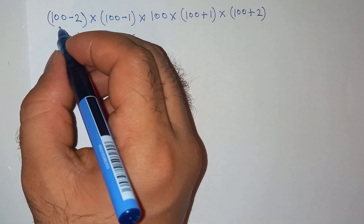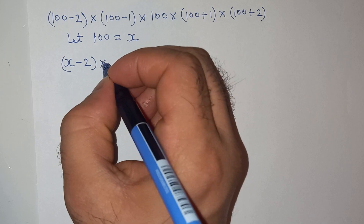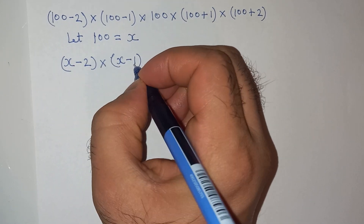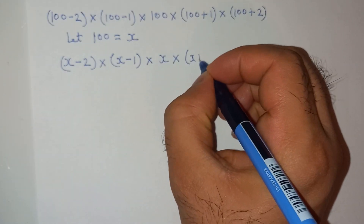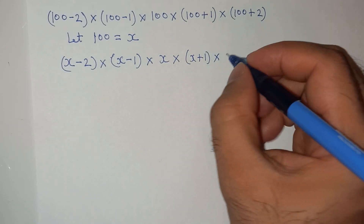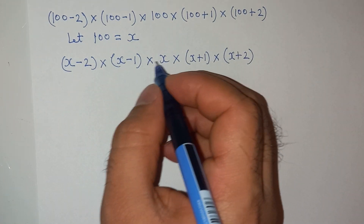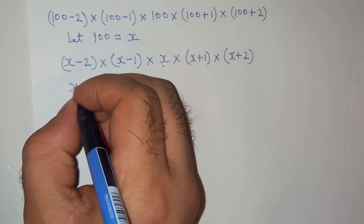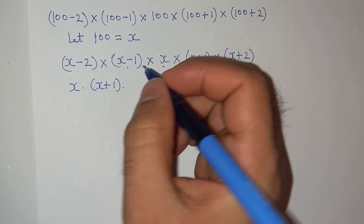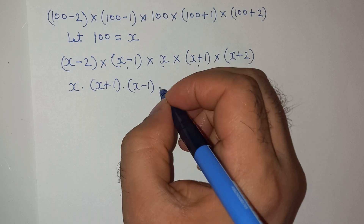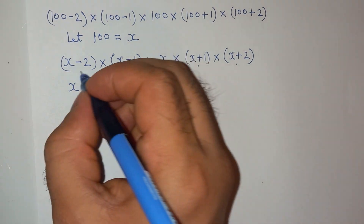We will replace the value of 100 with x in the above expression, so we have: (x − 2)(x − 1)(x)(x + 1)(x + 2). Now let's rearrange this expression: we write x, then (x + 1), then (x − 1), then (x + 2), and finally (x − 2).